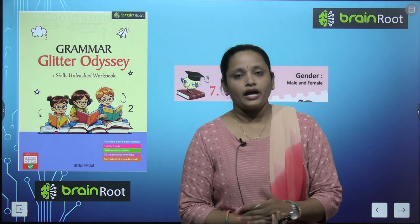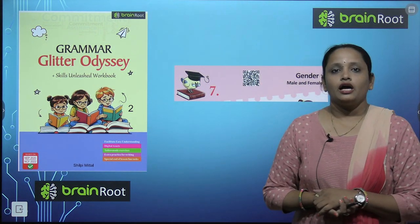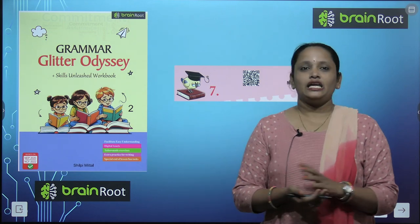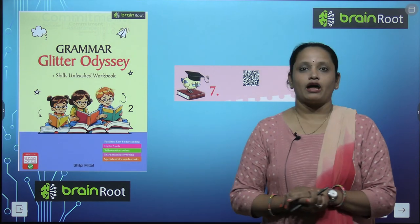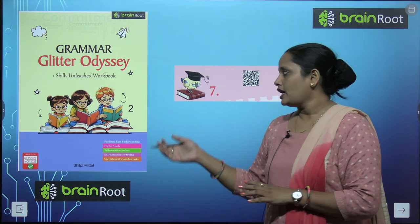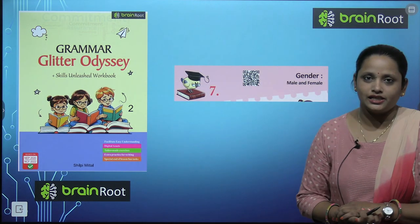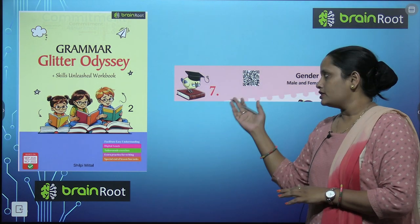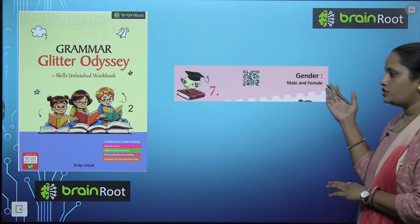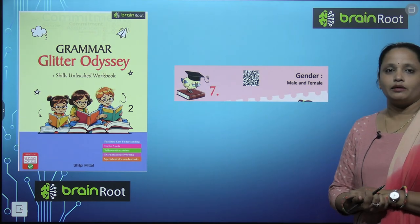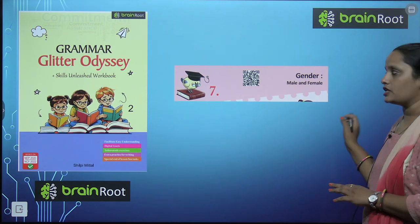Hello, my dear kids, welcome back. I am Vandana and we are learning English grammar from the Zainwood series. Here is the book Grammar Glitter Odyssey, Book 2. Today we will learn chapter number 7, and the name of the chapter is Gender, in which you will learn about male and female gender.